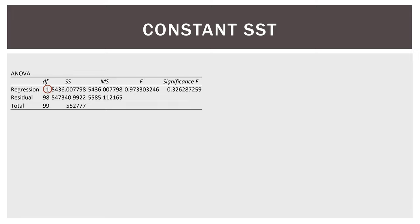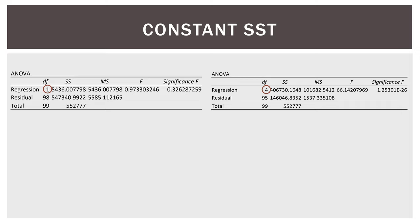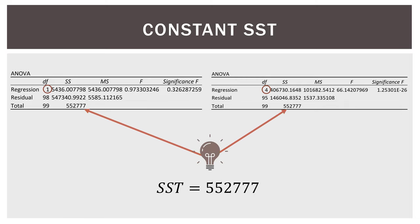Here is a quick example from Excel output. On the left we have a single-variable model, and on the right we have all four variables in the model. Notice that regardless of how many variables are included, the total sum of squares is 552,777 in both cases. This confirms that SST is fixed as long as our rows and data stay the same.